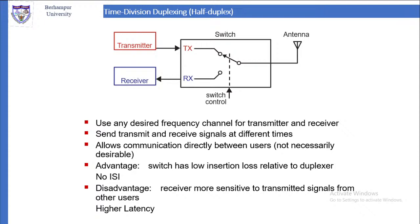In FDMA we have different frequency bands for different channels, and in each channel we use either half duplex or full duplex. The problem with FDMA is inter-symbol interference. When using digital communication, there is a possibility of frequency overlapping and interference. To avoid frequency overlapping, we introduce guard bands between two channels. However, the frequency in the guard band carries no transmission, which means that much of the spectrum is wasted.